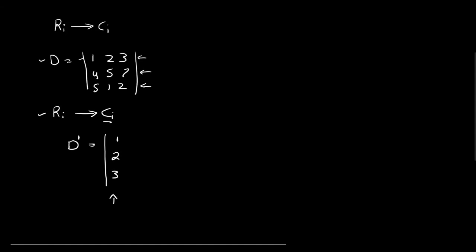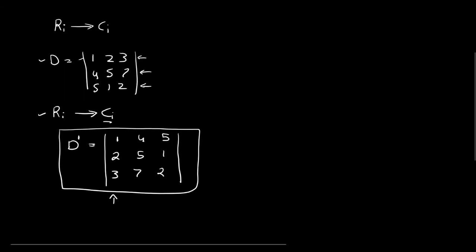And our third row has elements 5, 1, 2, so we are going to write it in the third column of our new determinant. So whenever you are performing this kind of operation, you have to denote it with this symbol.